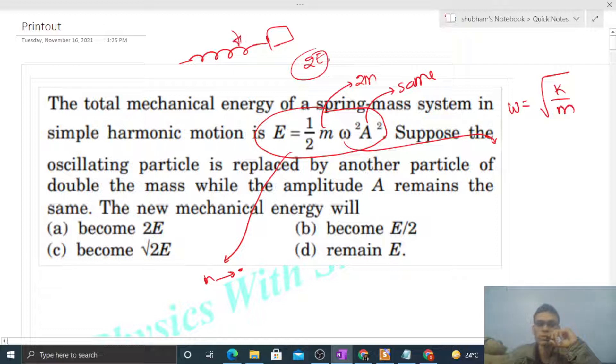So we will replace omega in terms of √(k/m). Here we have E = (1/2)m × (√(k/m))² × A².